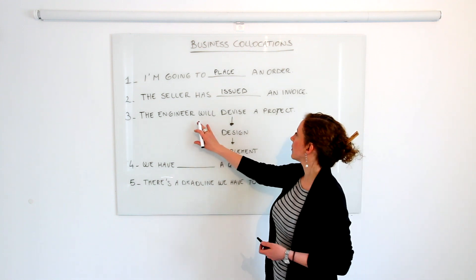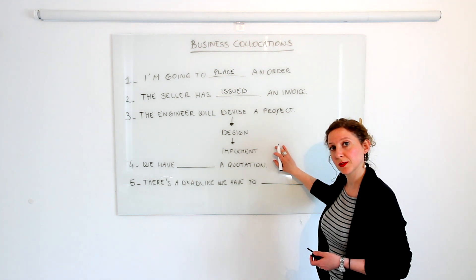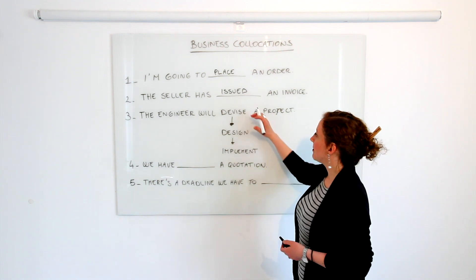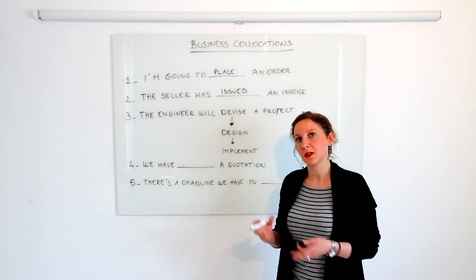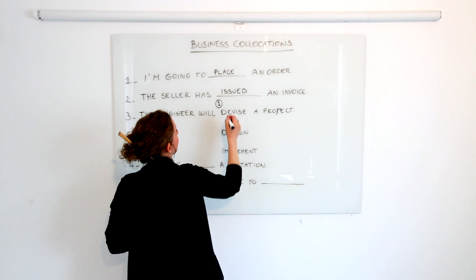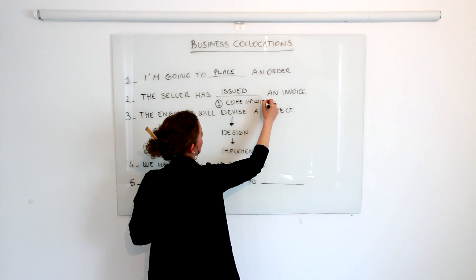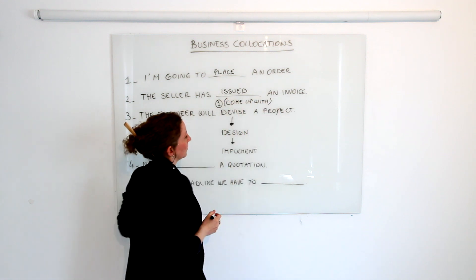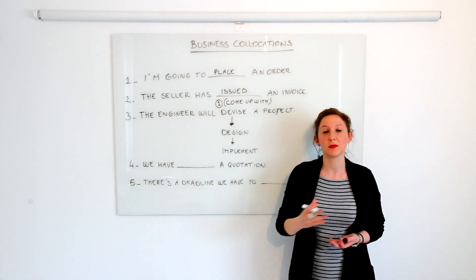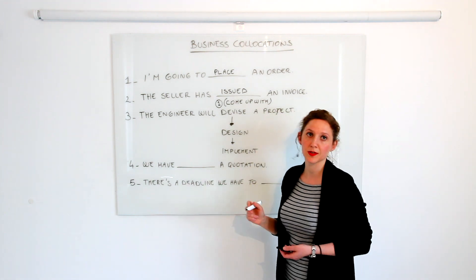Then we have: the engineer will devise a project, will design a project, or will implement a project. The three of them are correct, but they are very different in terms of meaning. They basically describe three different steps in the project itself. Devising is synonymous with 'come up with,' which is a little bit more informal, and it's about planning step by step — but only theoretically, without putting it on paper. By contrast, design means he's putting it down precisely on paper.